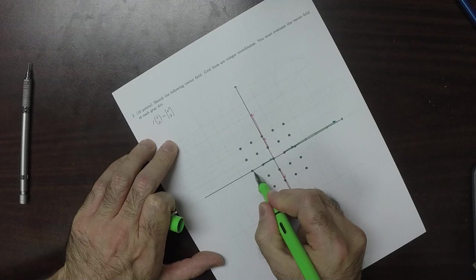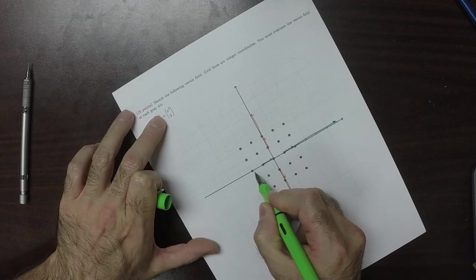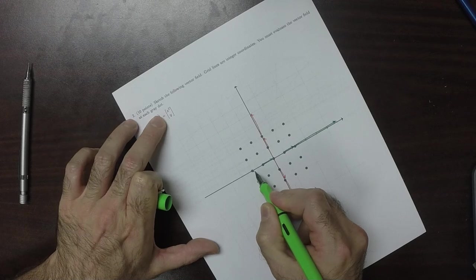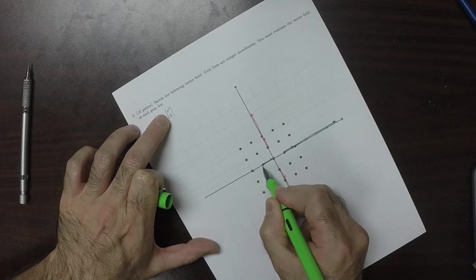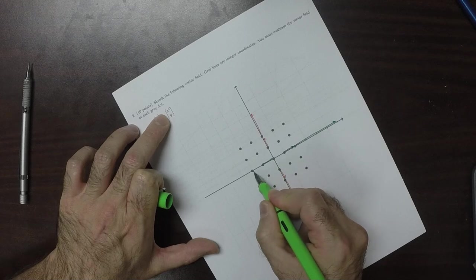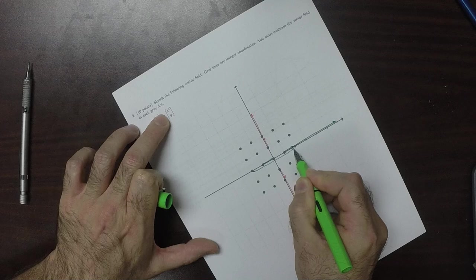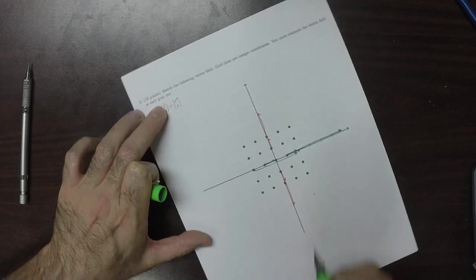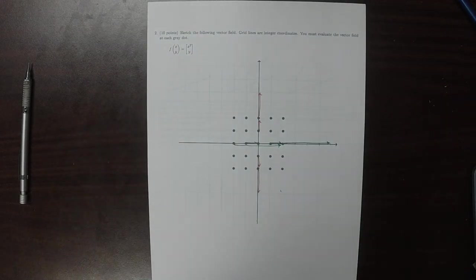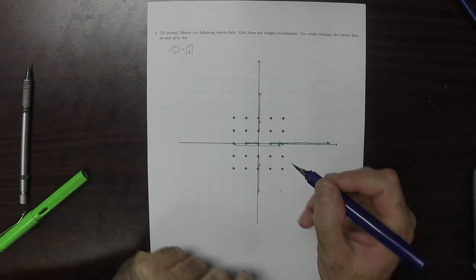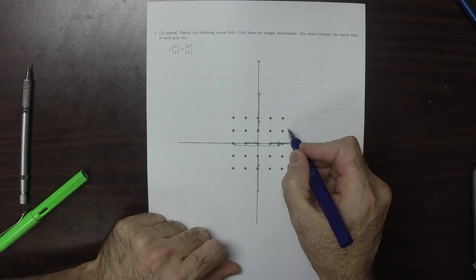And this one, again, x is negative 2, y is zero, so it goes how far? 2, 4—1, 2, 3, 4. Okay, so those are the easy ones.